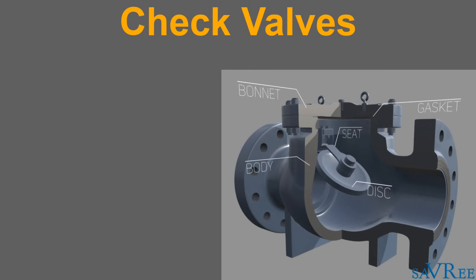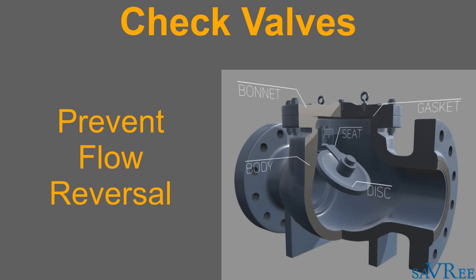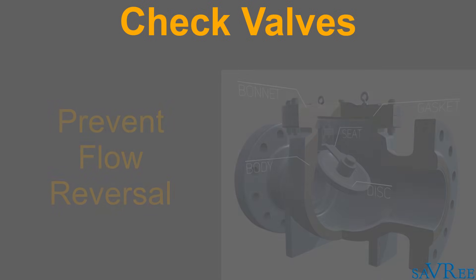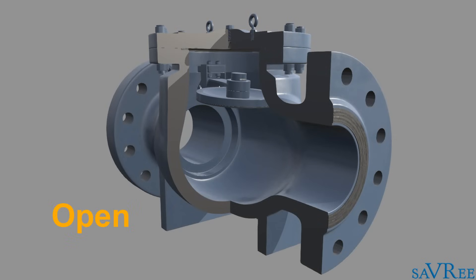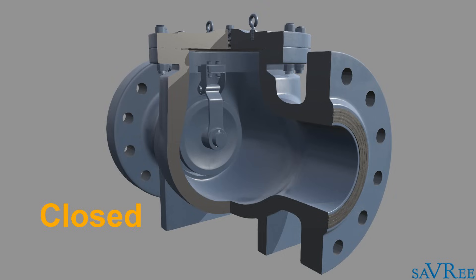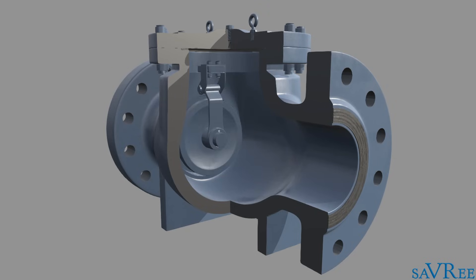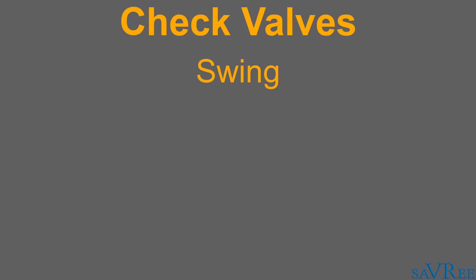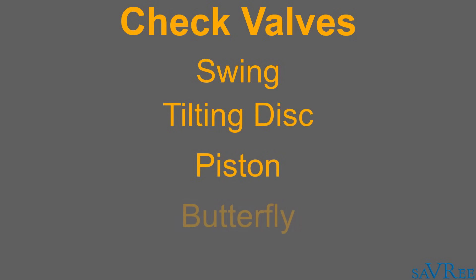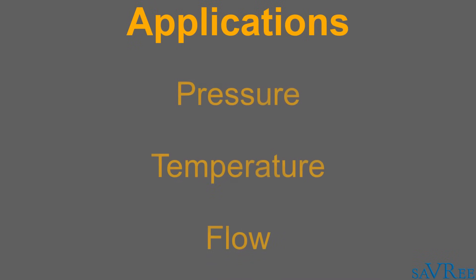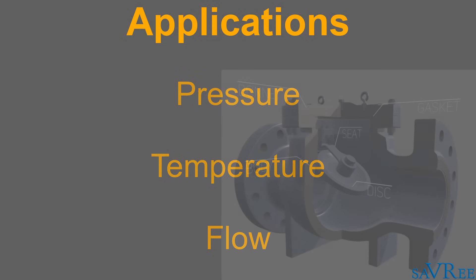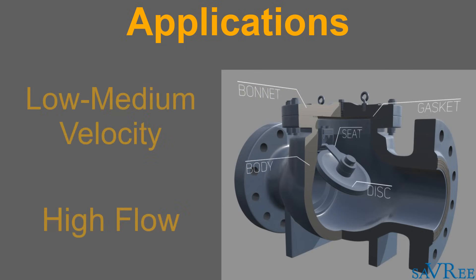Check valves are designed to prevent the reversal of flow in a piping system. These valves are activated by the flowing material in the pipeline. The pressure of the fluid passing through the system opens the valve, whilst any reversal of flow will close the valve. Closure is accomplished by the weight of the check mechanism, by back pressure, by a spring, or by any combination of these means. The most common types of check valves are the swing, tilting disc, piston, butterfly and stop valves. The type used will depend upon the system pressure, temperature and flow requirements. For example, swing check valves are very well suited for medium velocity, high volume flow applications and have a relatively low pressure drop.